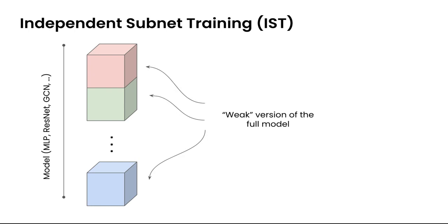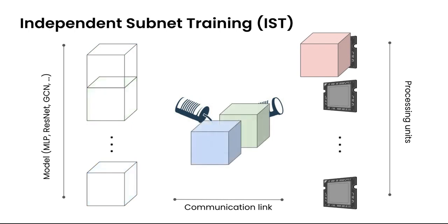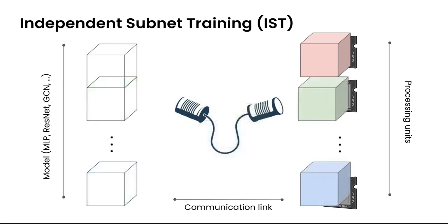So how IST operates within one iteration? Assume we have already decided the decomposition of the model into weaker ones. These models are sent over the communication link to the workers for training, for example via backpropagation. Here we just see the red box and this also holds for the other part of the model.